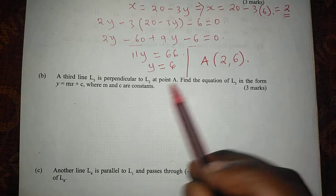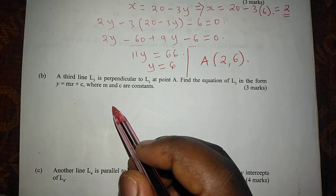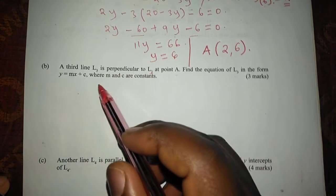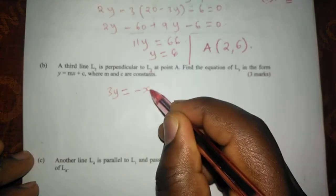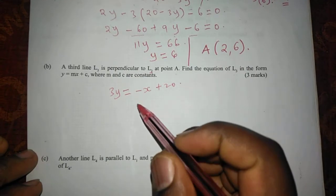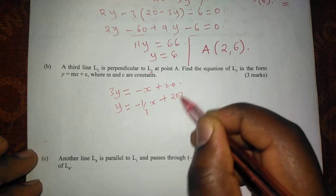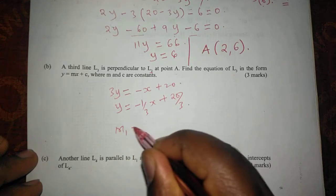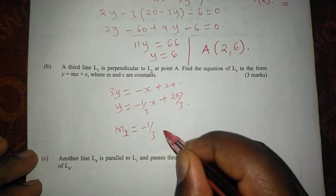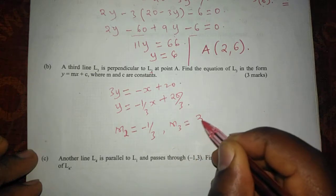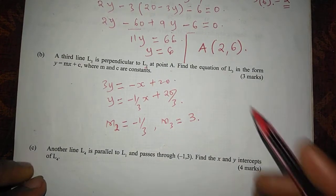Find the equation of L3 in the form Y equals to MX plus C, where M and C are constants. We first arrange the equation of line 2 in the form Y equals MX plus C. Rearranging gives 3Y equals negative X plus 20, such that Y equals to negative one-third X plus 20 over 3. The coefficient of X gives us the gradient, so M2 equals negative 1 over 3. This means the gradient of line 3 is going to be 3, such that when the two gradients are multiplied they give negative 1, since the two lines are perpendicular.